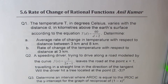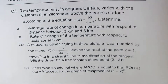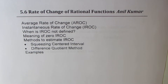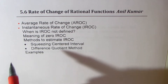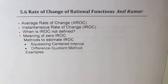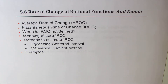I'm Anil Kumar. Welcome to my series on Rational Functions. Now we'll try to understand rate of change. In this particular video, I'll solve three questions based on average and instantaneous rate of change. You can always pause the video, copy these questions, and work them out. We'll first try to understand the concepts and then solve these questions. The topics I'm going to cover are average rate of change, instantaneous rate of change, when instantaneous rate of change is not defined, and what is the meaning of zero instantaneous rate of change. We'll talk about two methods to estimate instantaneous rate of change: squeezing centered interval and difference quotient method.